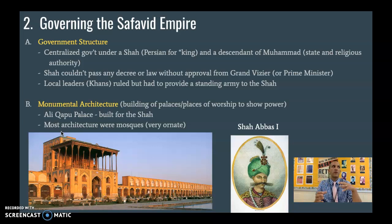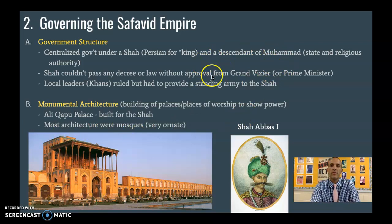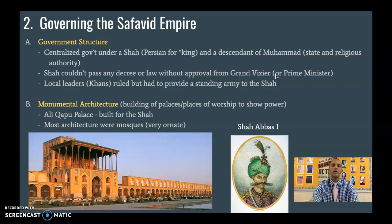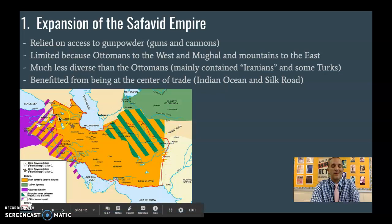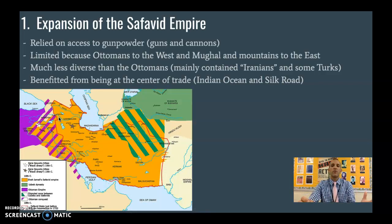The Shah doesn't have complete and absolute rule because he can't pass any law or decree without the approval from someone known as the Grand Vizier, who is essentially like their prime minister. So there is some check on power, but he is really a centralized authority with complete control of everything for the most part. However, just like the Ottoman, this is a huge empire. You can't just send out a declaration and have everyone follow every single law, so you really need some localized control.